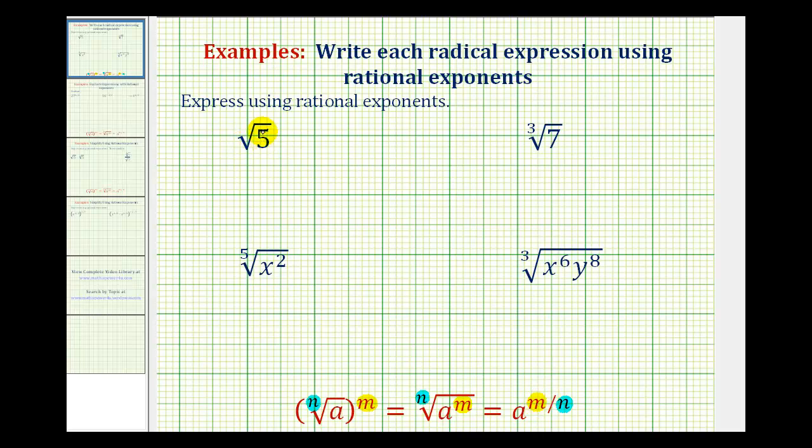So for square root five, we need to recognize that the index is two, and the exponent on the five would be one. And since the index is two and the exponent is one, we can rewrite this as five to the power of one-half.